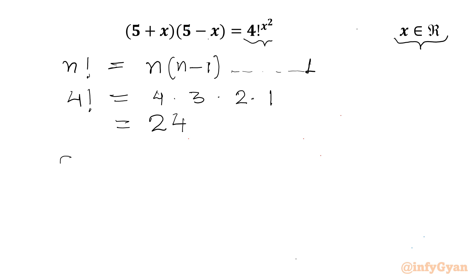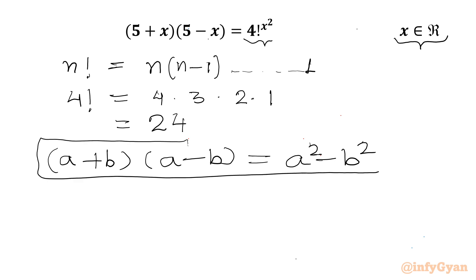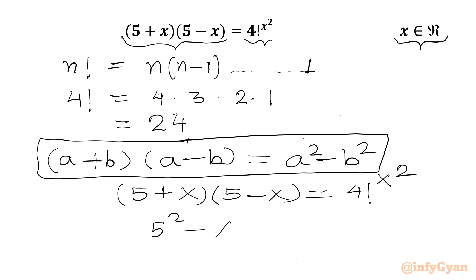Now come to the left hand side. I will write one algebraic formula or identity: it is a plus b times a minus b, the difference of two squares identity, equal to a squared minus b squared. We will use this on the left hand side. So our equation becomes 5 plus x times 5 minus x equal to 4 factorial to the power x squared. The left hand side will be 5 squared minus x squared.